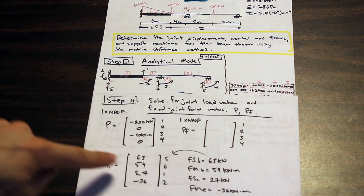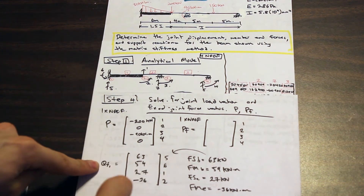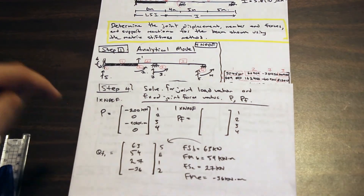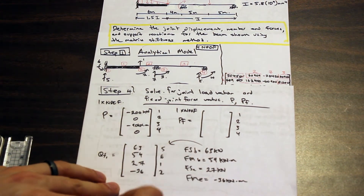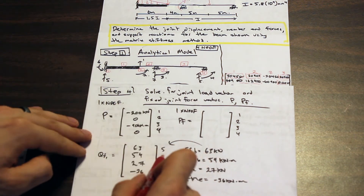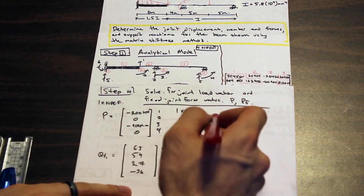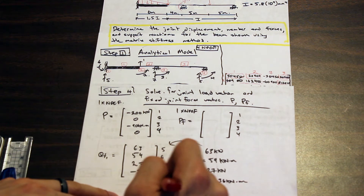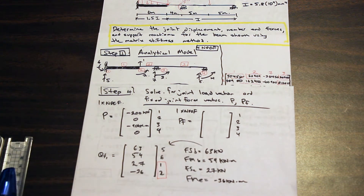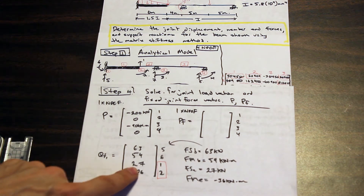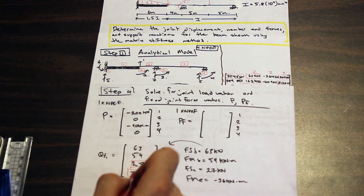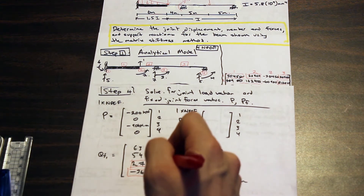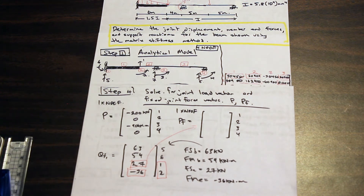Just like we did with the S matrix, we only transfer entries that correspond to the degrees of freedom. Code numbers five and six are not degrees of freedom, so we ignore them for PF. We're only concerned with the values that correlate with degrees of freedom — codes one and two in this case — and those go up into the PF vector.